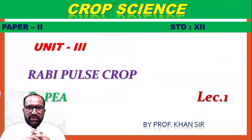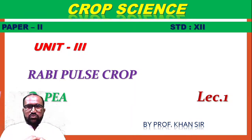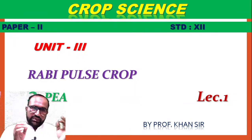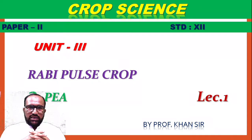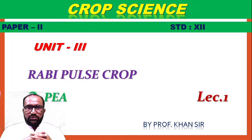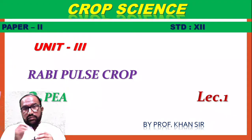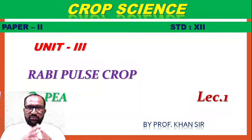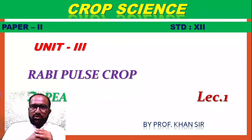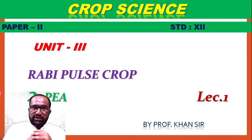Welcome to Khan's Crop Academy. Good morning students. We are going to learn Crop Science, Standard 12, Paper Second, Unit Number Third - Rabbi Pulse Crop. In the previous lecture we explained the gram crop. Now we start with Agriculture Science and Technology.